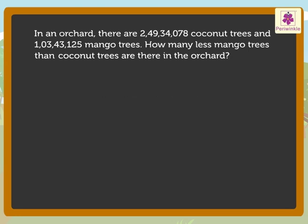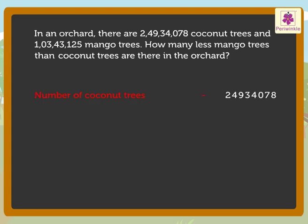Two crore forty nine lakh thirty four thousand seventy eight are the number of coconut trees in the orchard. So we write the statement as: Number of coconut trees — two crore forty nine lakh thirty four thousand seventy eight.